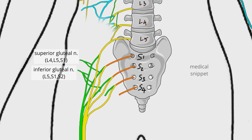The posterior femoral cutaneous nerve is the only branch of the sacral plexus that receives fibers from both anterior and posterior divisions of the ventral rami of sacral spinal nerves. It is formed by the posterior divisions of S1 and S2 and the anterior divisions of S2 and S3. It has no muscular branches and supplies the skin on the posterior surface of the thigh, leg, and skin of the perineum.